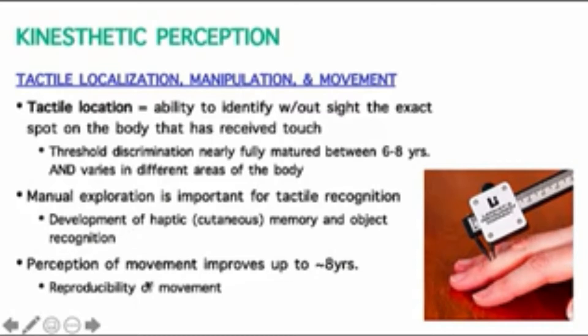We also know that perception of movement improves up to age eight, and this is largely related to a person's ability to reproduce a movement that has been observed or executed on their body. Some studies will have a person close their eyes, put one arm under the table, and then take the other arm and try to place it on top of the table such that it would be stacked with the other arm — without vision. How well are you able to reproduce the position of your arm under the table with the arm on top?